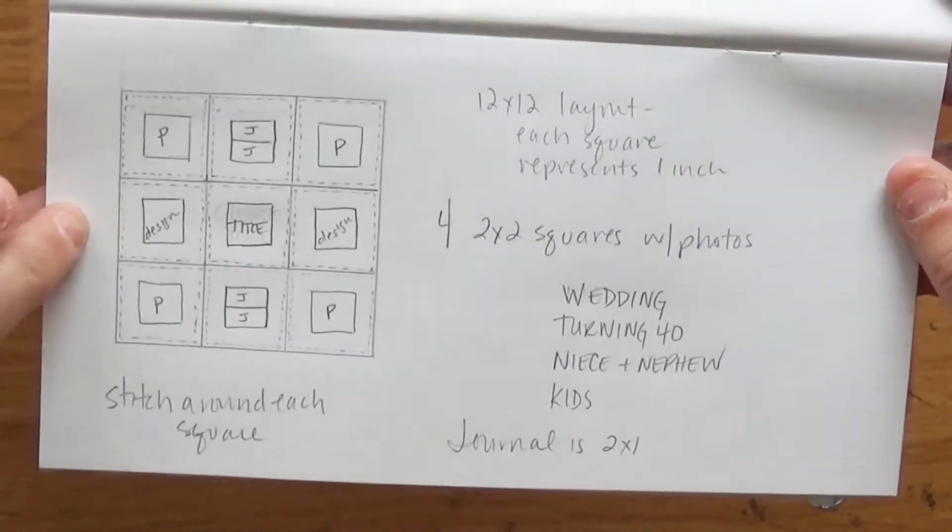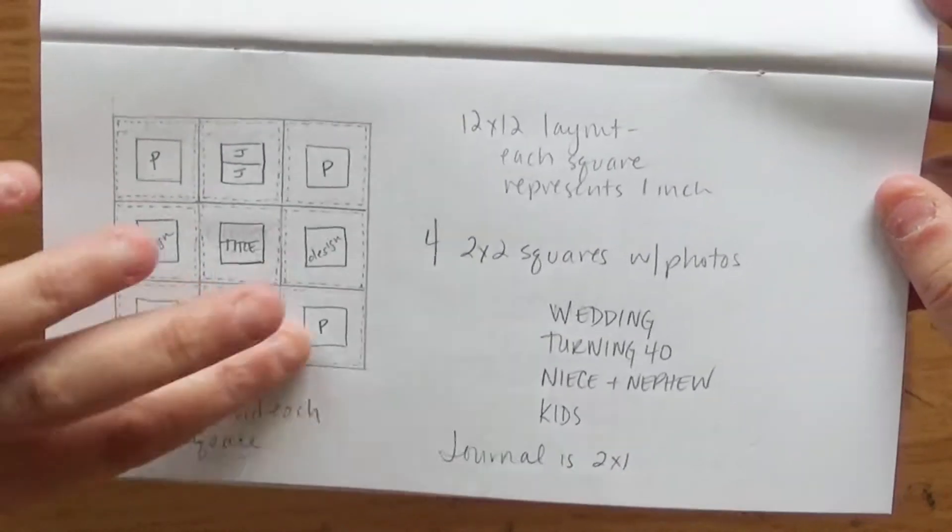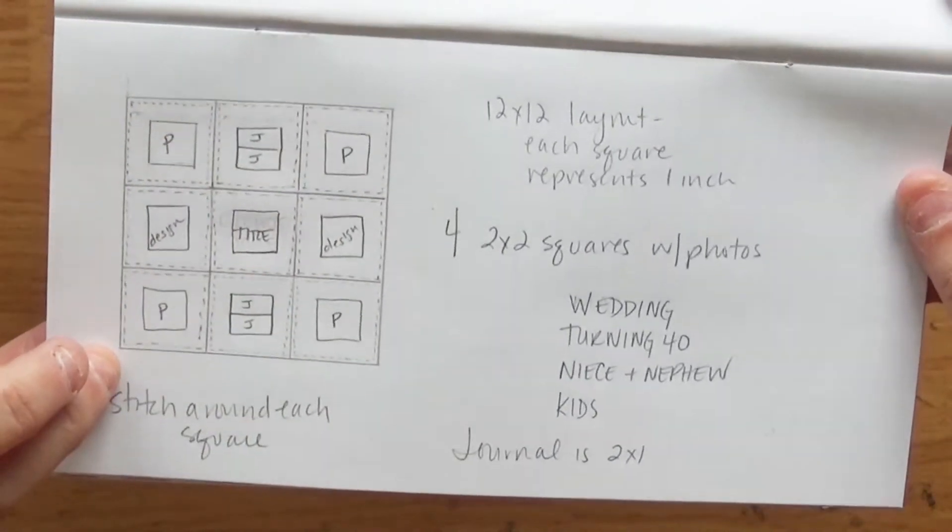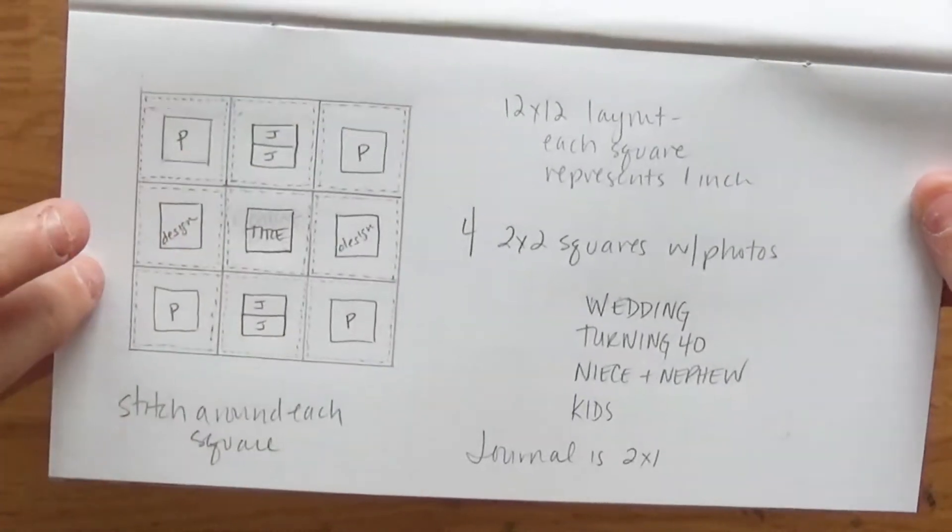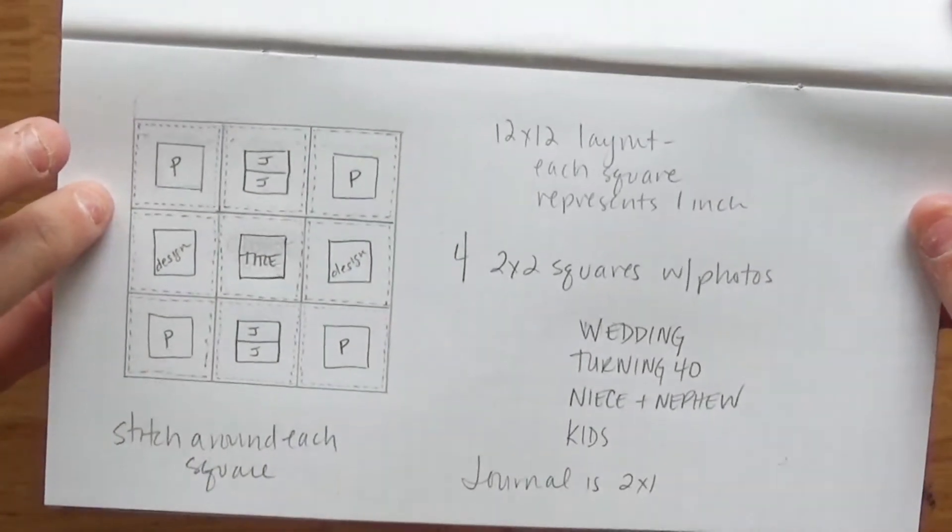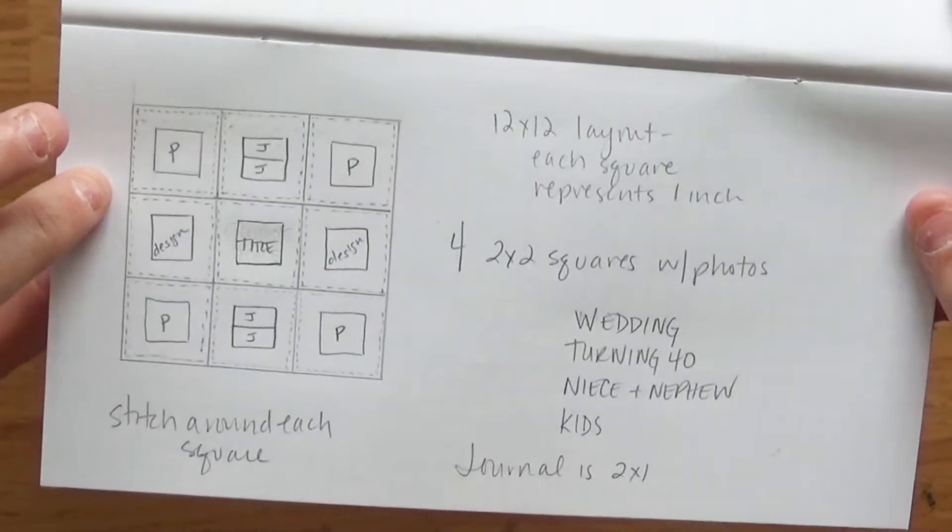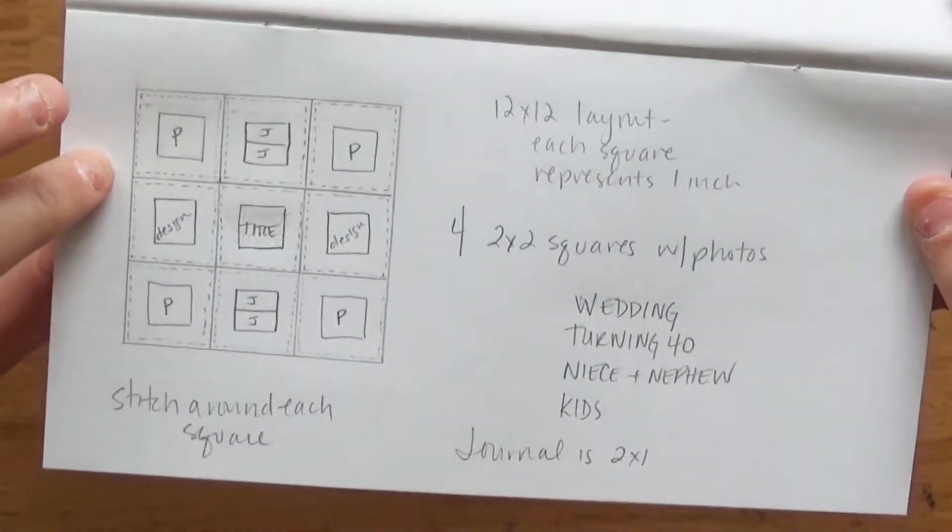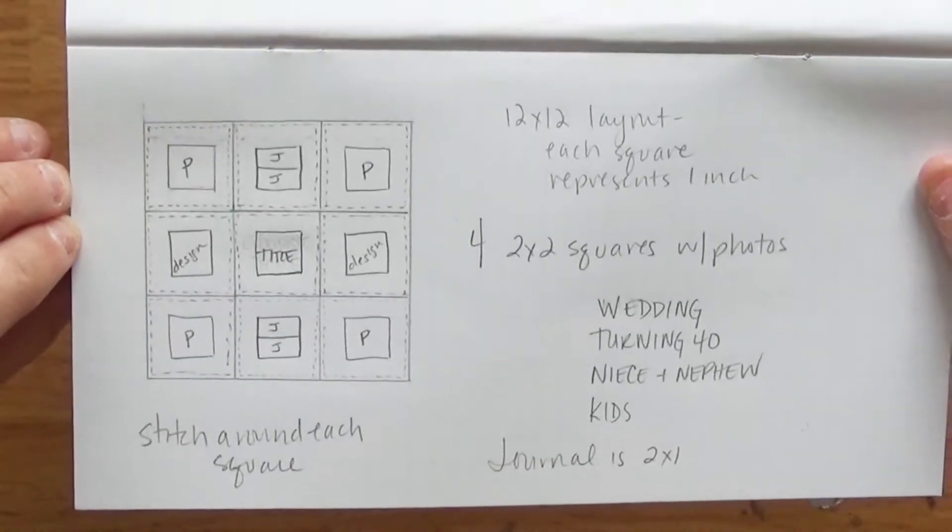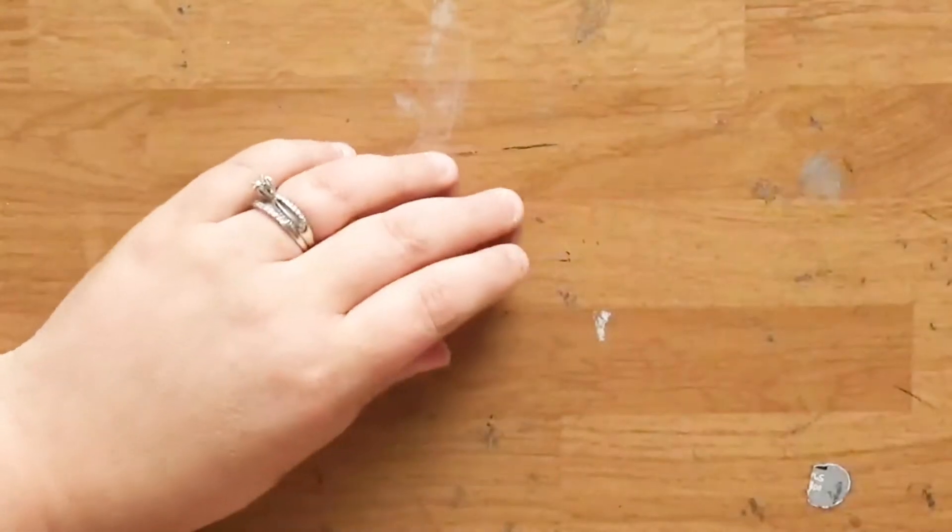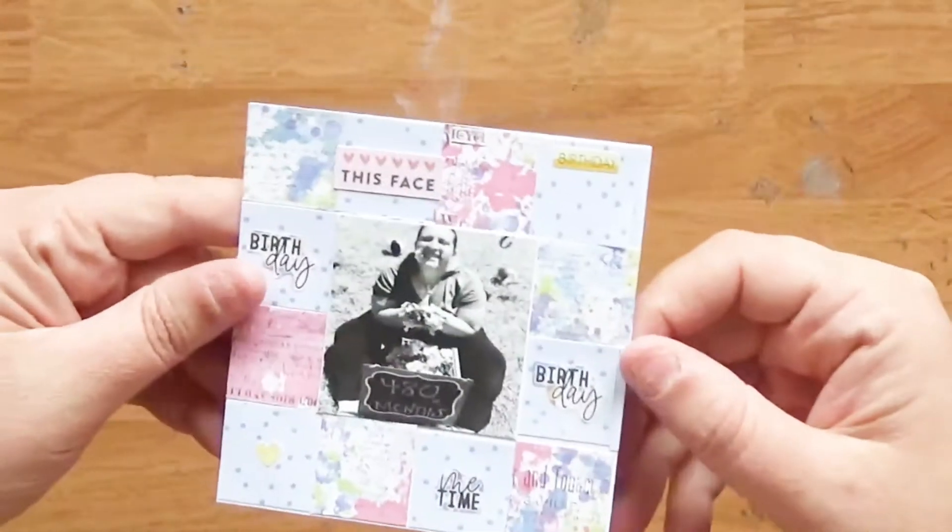So what I did was I took a 12 by 12 piece of scrapbook paper and I divided it into nine four inch squares and each square I'm going to make into a quilt. I will take a picture of this and put this at the end of the video, the actual sketch. But I can show you what I already did was I started this to see how it works.